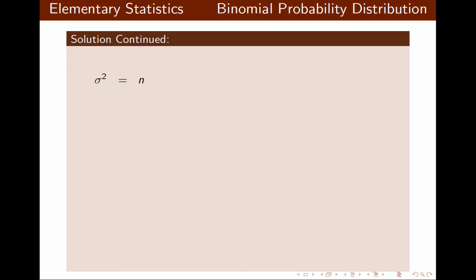The variance sigma squared is n times P times Q, and the variance is 7.2. Standard deviation is always the square root of the variance, which rounded to three decimal places gives us 2.683.